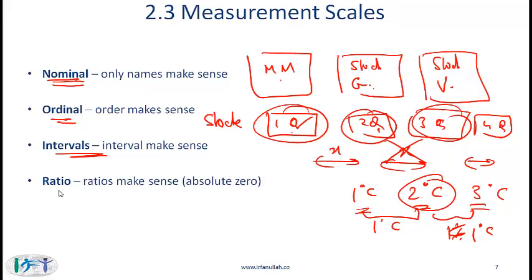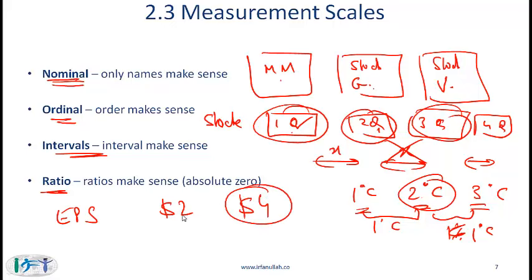The most precise measure is the ratio scale, where we have order, intervals make sense, and the ratio also makes sense. The classic example is earnings per share. If EPS is $2 in the first quarter and $4 in the second quarter, we can say earnings were two times greater. With a ratio scale there will also be an absolute zero — EPS of zero means the absence of any earnings — and you can also have negative earnings. Notice that with interval scales, zero does not mean the absence of temperature.